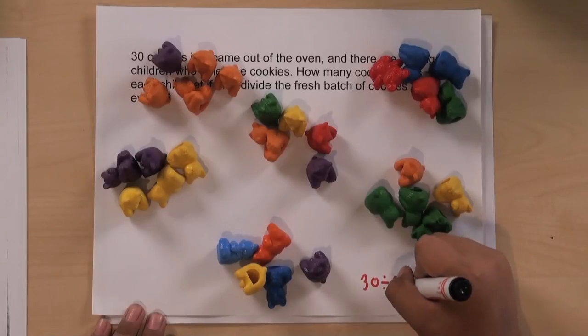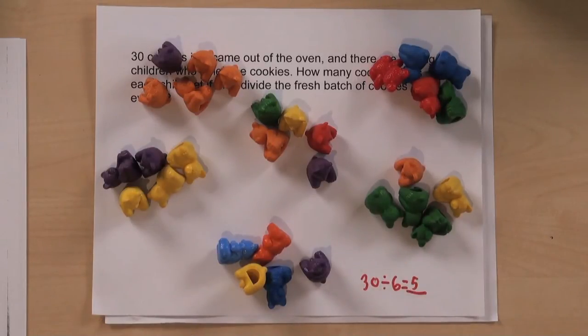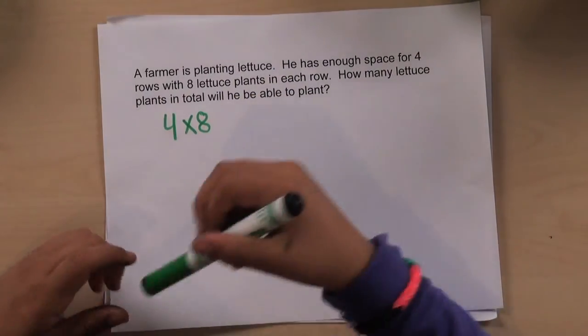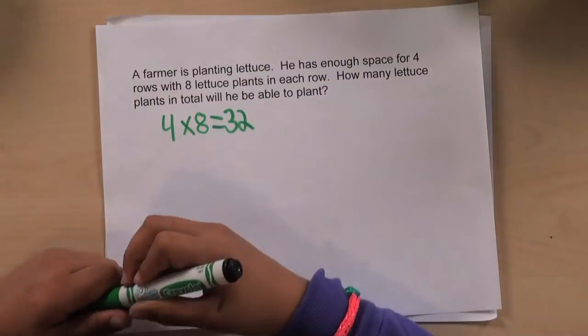And there are six children, and each one gets five cookies. As time goes on, it will get easier for third graders to read a word problem, come up with an equation, and solve the problem.